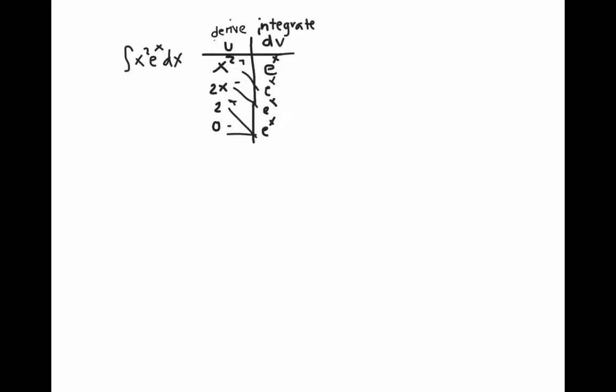Then when we plug it back into a formula we get x squared e to the x minus 2x e to the x plus 2 e to the x, and then zero times e to the x is just zero. And this is our end product.